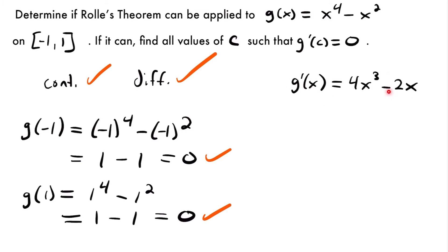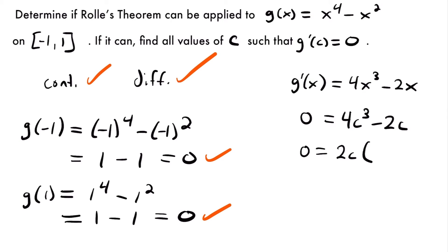We already took the derivative, so we set it equal to 0 and replace x with c: 0 = 4c³ - 2c. We factor out the common factor 2c: 0 = 2c(2c² - 1). We pulled 2c out of the first term, leaving 1, and out of the second term, leaving 2c² - 1.